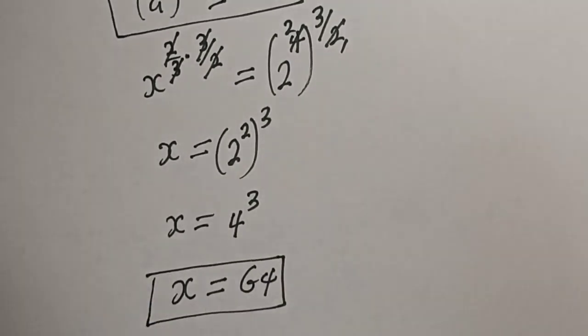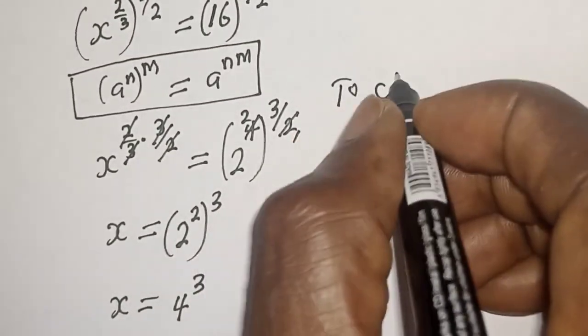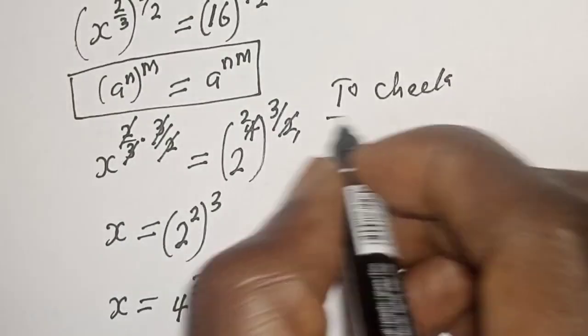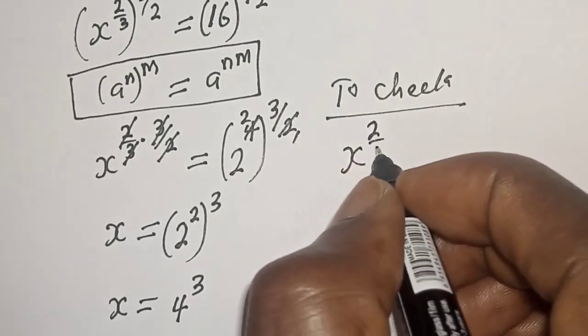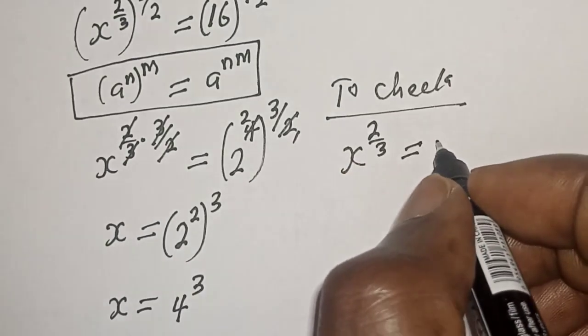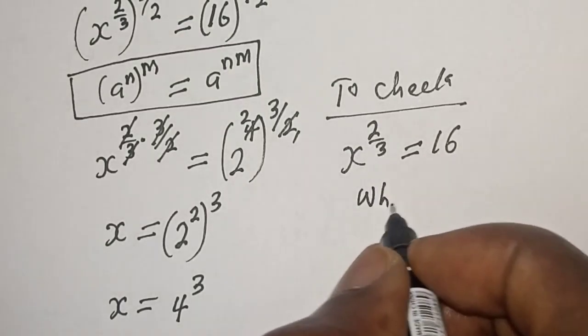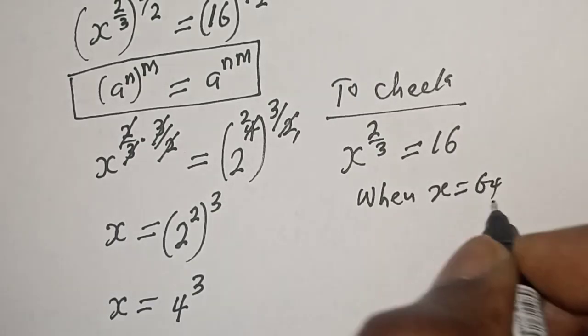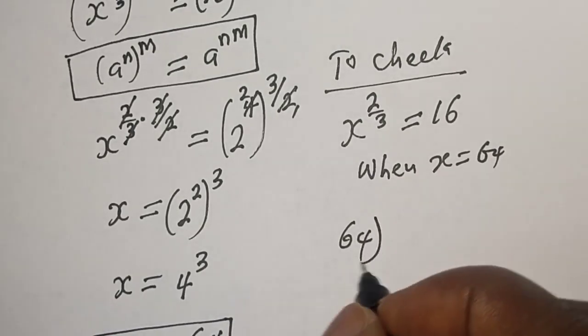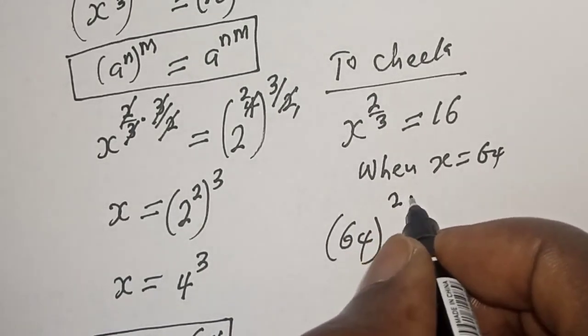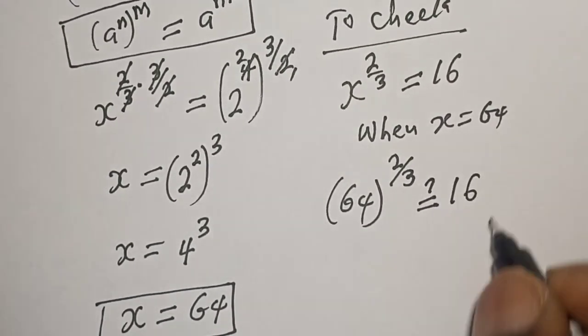We can check to confirm if our answer is right or wrong. To check, the equation given is x raised to power 2/3 is equal to 16. When x is equal to 64, then 64 raised to power 2/3 must be equal to 16.